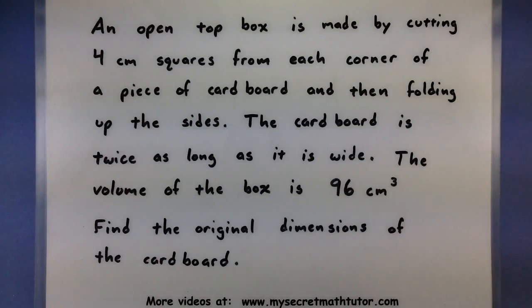So the word problem I've cooked up is this. We're looking to make an open top box by cutting 4 centimeter squares out of each corner and then folding up the remaining sides. The cardboard that we'll be using is twice as long as it is wide. Now the volume of this box we want to be 96 centimeters cubed. Our goal is to find the original dimensions of the cardboard.